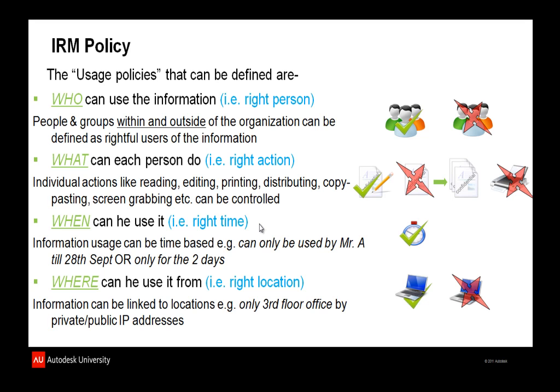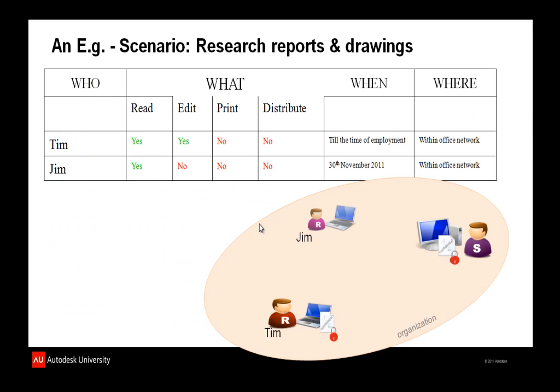The second policy is 'What' — meaning what can each person do with the document. For example, can they read it, edit it, print it, or forward it? Third is 'When' — a time-based restriction where you can specify dates so the document opens only after a predefined time and does not open after another predefined time. The last is 'Where' — a location-based restriction where you can restrict a document to a specific computer or network of computers.